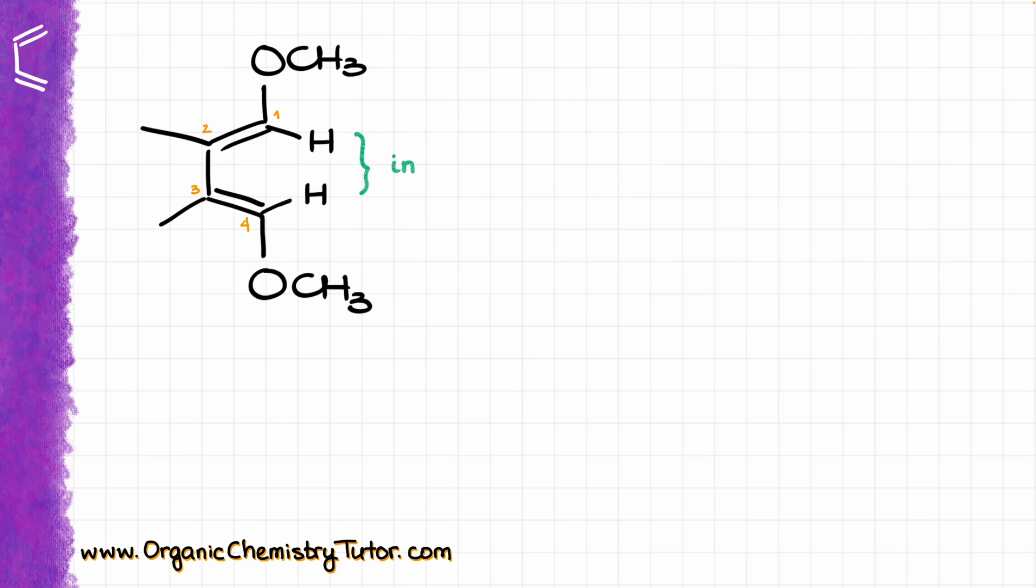We are going to refer to the groups that are looking inside as the in-groups. In this case, it is just a couple of hydrogens looking inside of my molecule. The other two groups that are going to be looking away, those are going to be my out-groups, and in this case it's a couple of methoxy groups. I have one on the bottom and another one on the top.